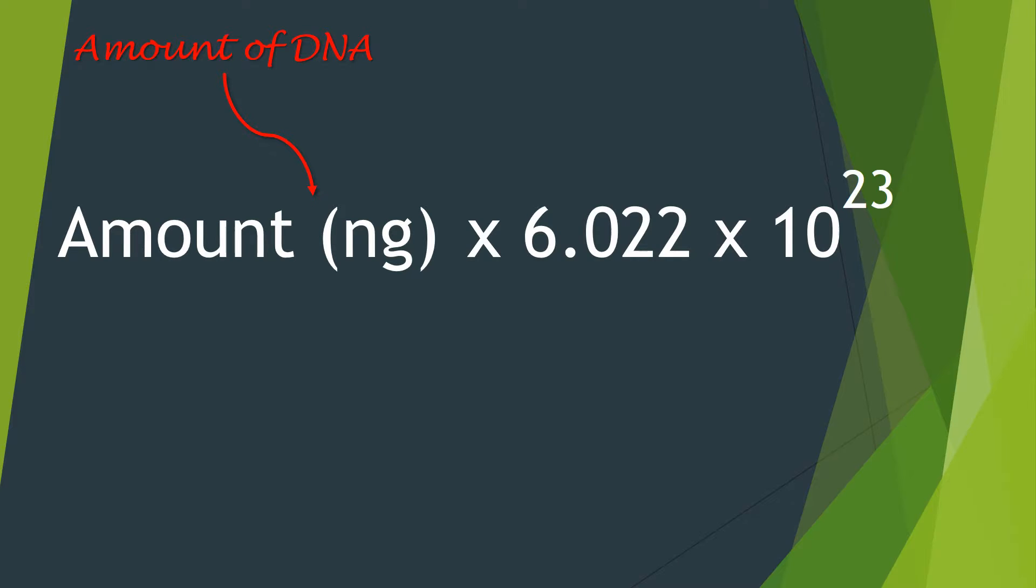The first component of the equation is that you need to know what the amount of DNA is, and this needs to be in nanograms. So this will be the amount of DNA of interest. And then this value is multiplied by 6.022 times 10 to the power of 23, and this number represents Avogadro's constant. Now Avogadro's constant is the number of molecules in one mole.